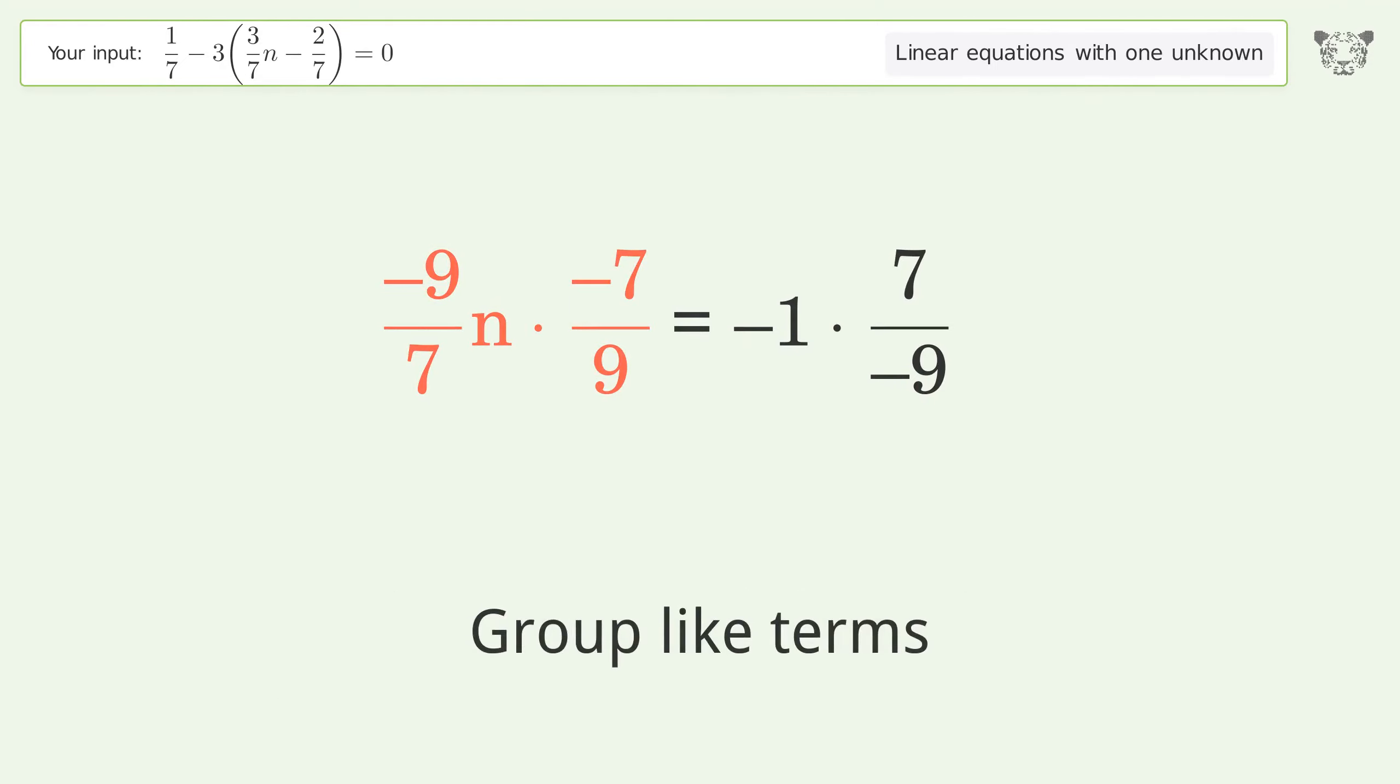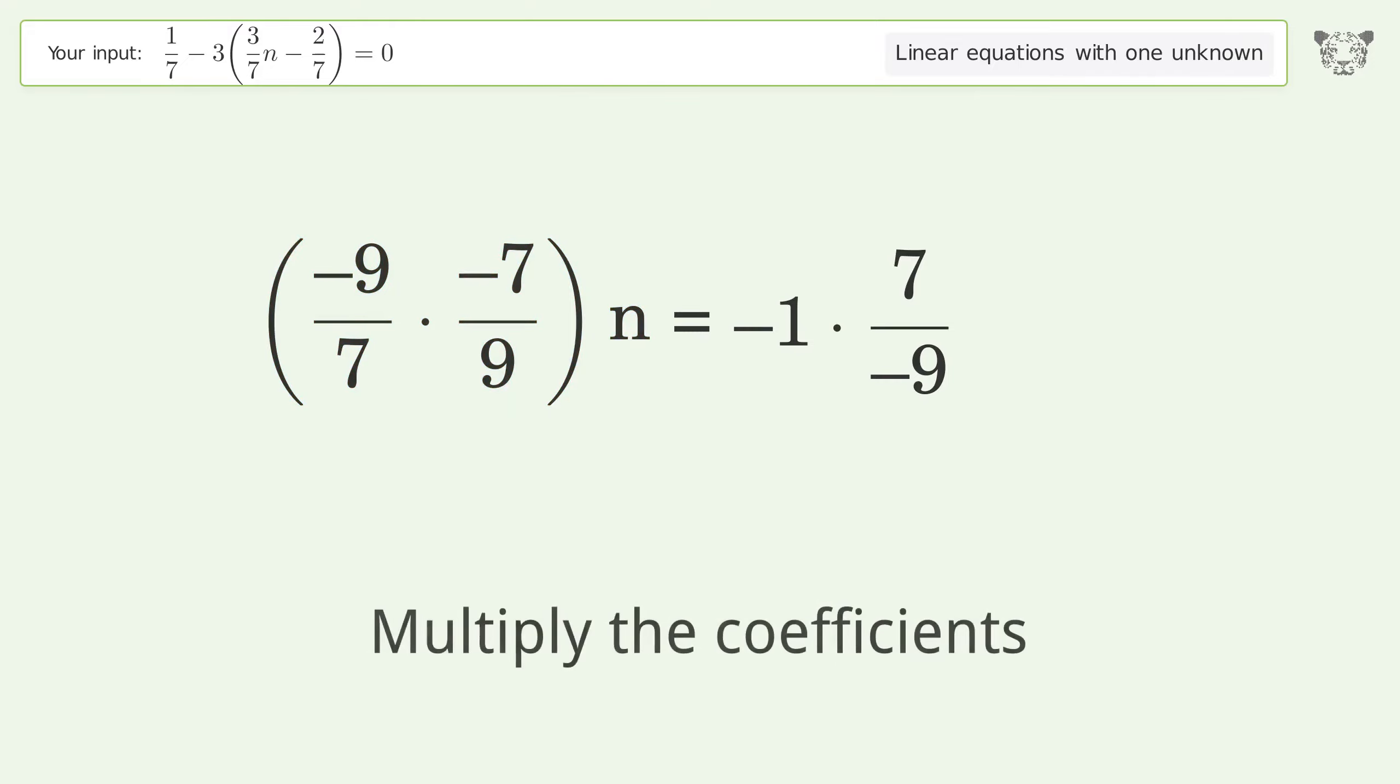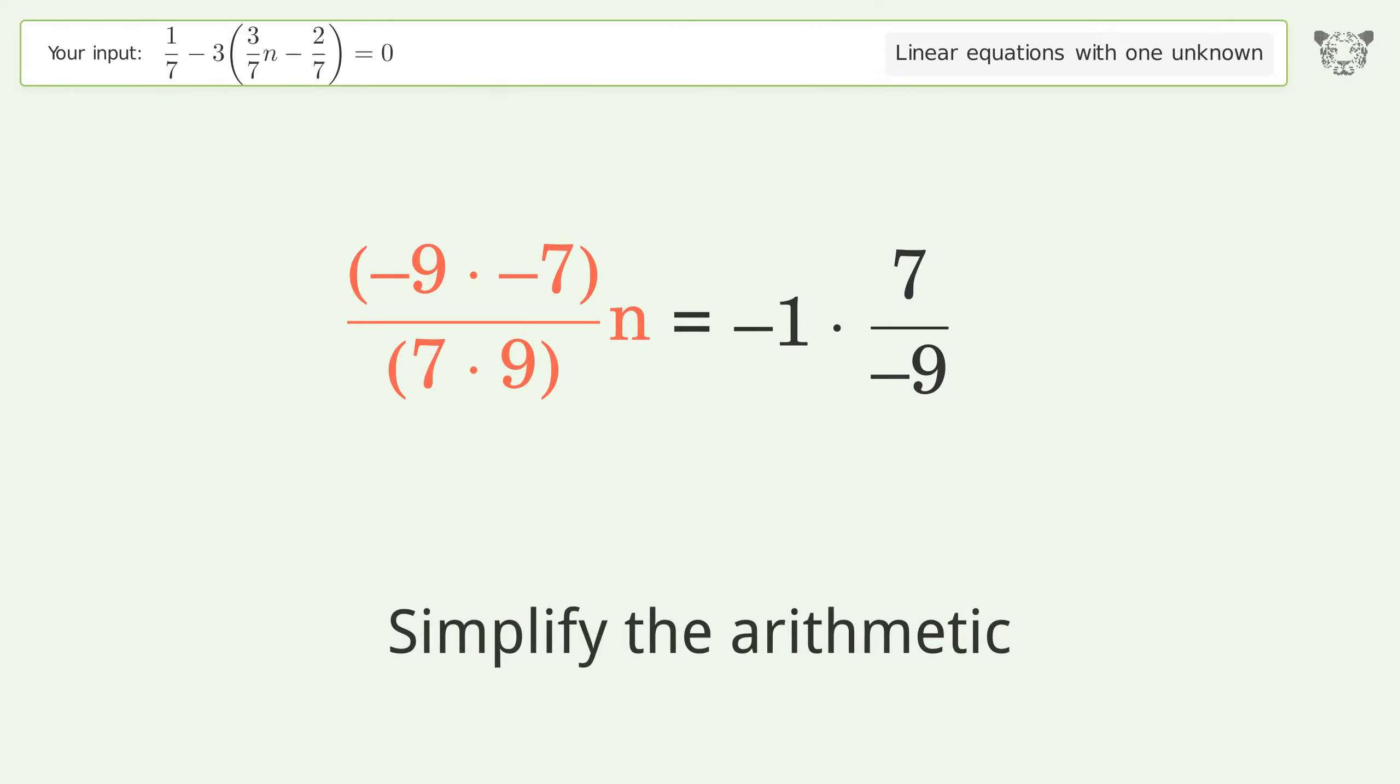Group like terms. Multiply the coefficients. Simplify the arithmetic. Cancel out the negatives.